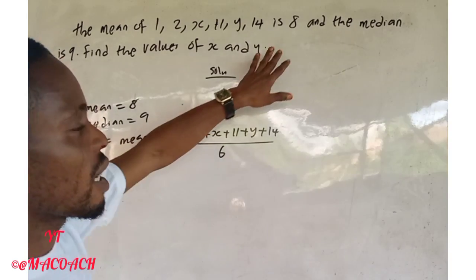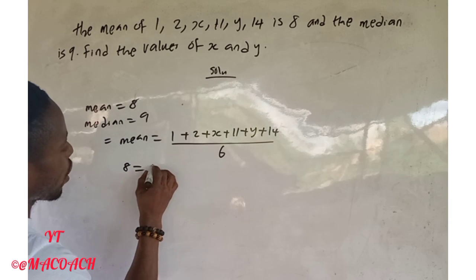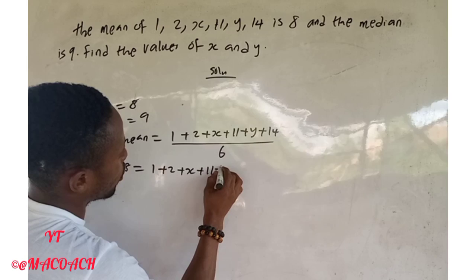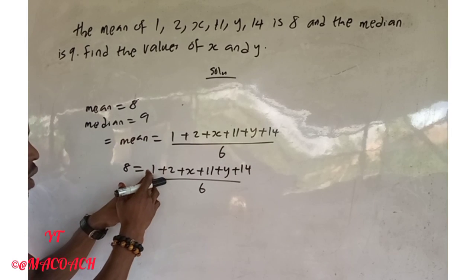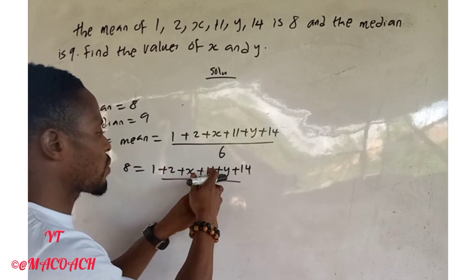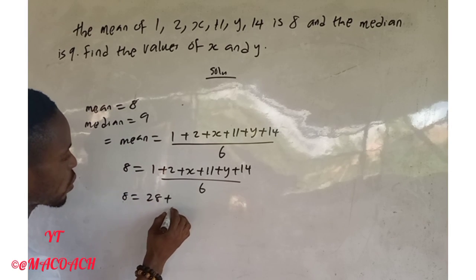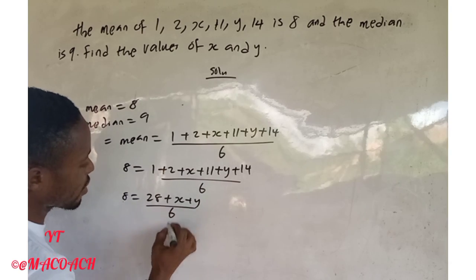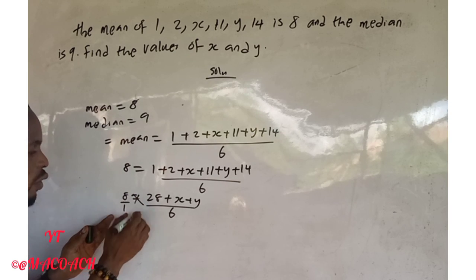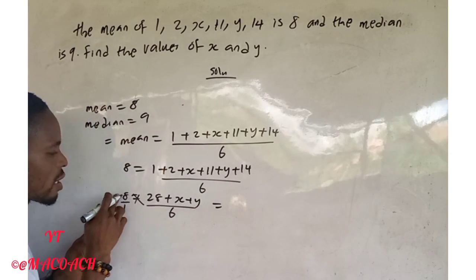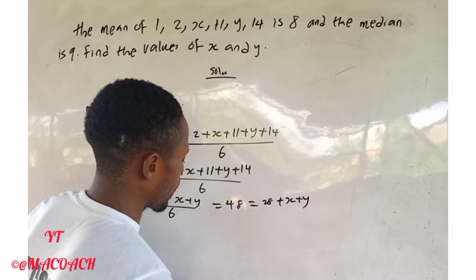The mean is given as eight, so we have: 8 = (1 + 2 + s + 11 + y + 14) / 6. Let's add the constants together: 1 + 2 + 11 + 14 = 28. So we have: 8 = (28 + s + y) / 6. Multiply both sides by 6: 6 × 8 = 48 = 28 + s + y.